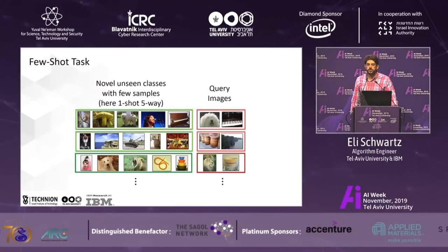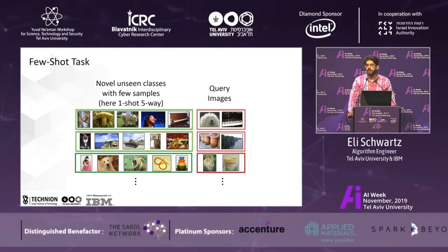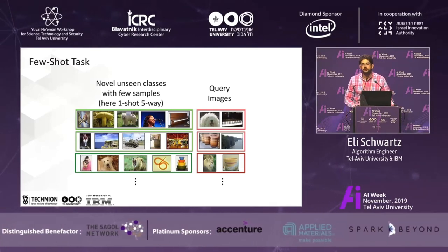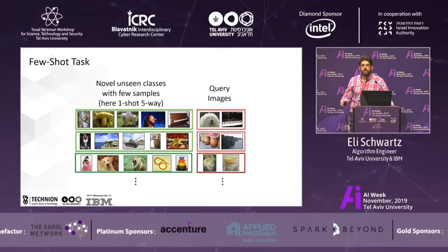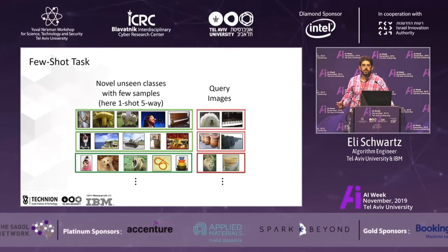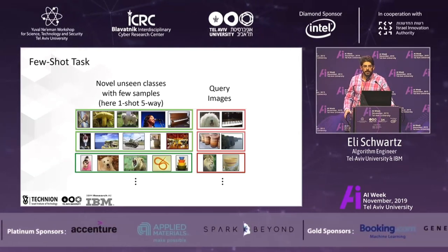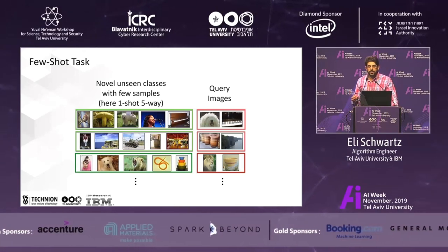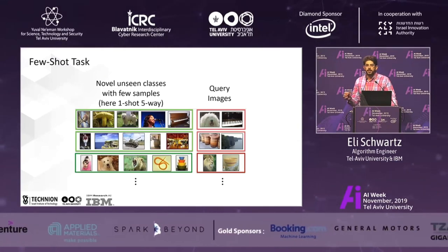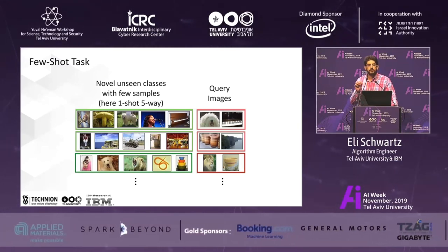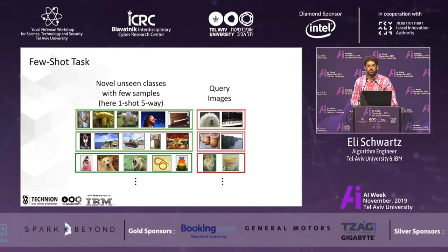So what is Few-Shot Learning? Unlike fully-supervised classification, where we are given many samples for a given set of categories and tested on the same categories, here the test is done on novel categories unseen during training. The test is constructed of episodes. Each episode, if it's a five-way, has five novel categories, and we get, for instance, one example per category, and we are given query images that we need to assign to the correct category.